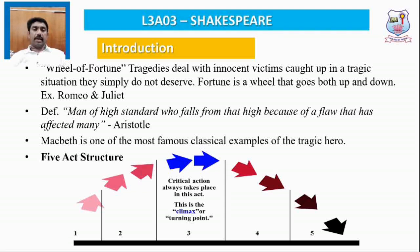A tragic hero is defined as a man of high standard who falls from that high standard because of a tragic flaw — what Aristotle calls hamartia — that affects many. A tragic hero is always a man of noble birth with noble virtues, high standards, extreme courage, and a great warrior. A classical example is Macbeth himself, who possesses all the conventional qualities of a classical tragic hero.